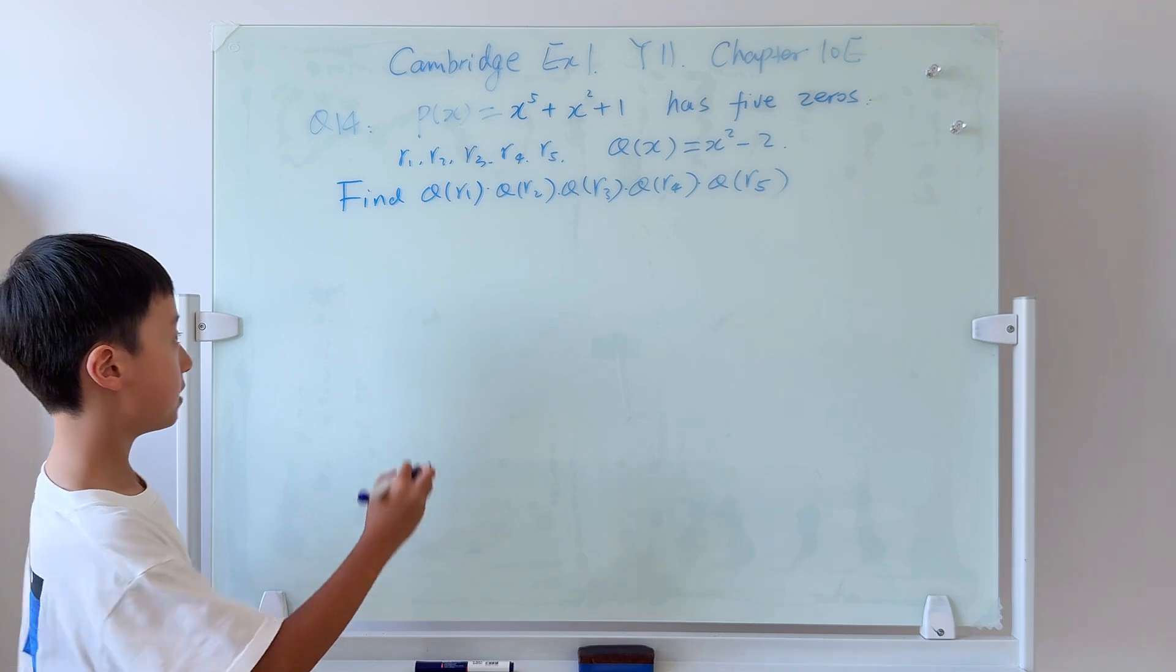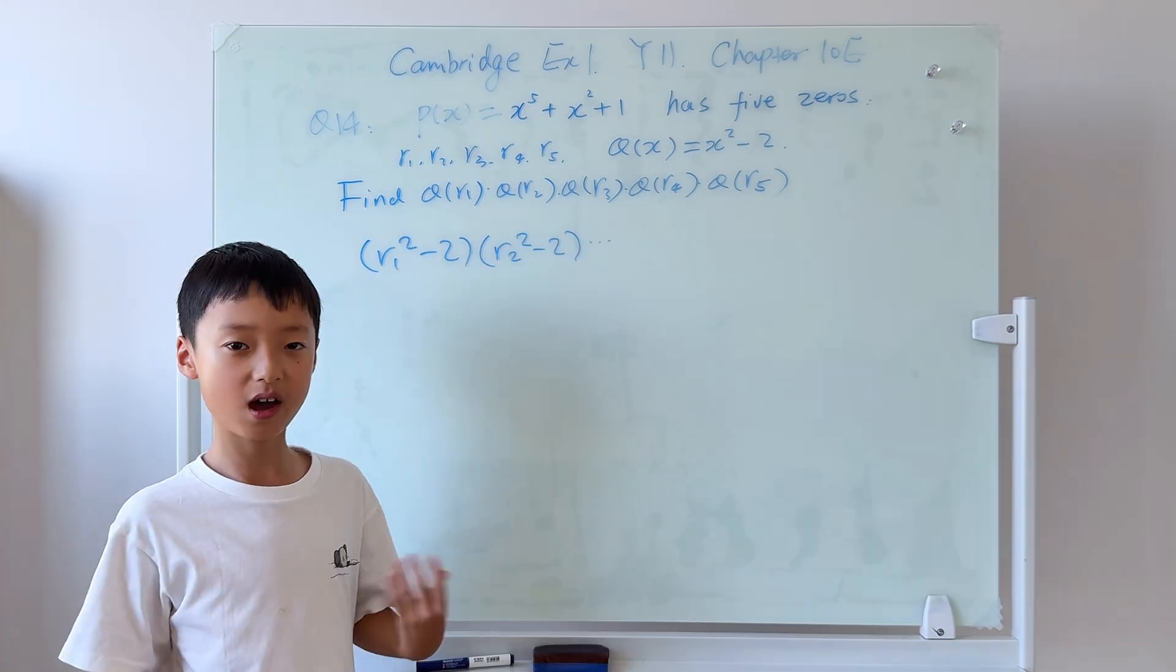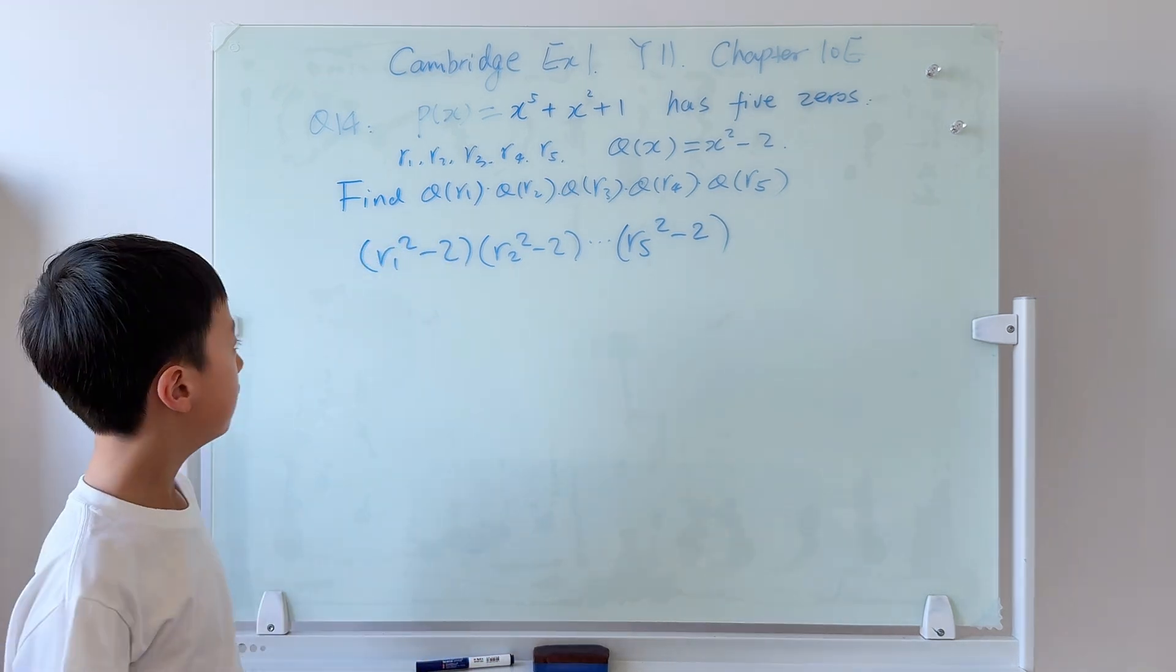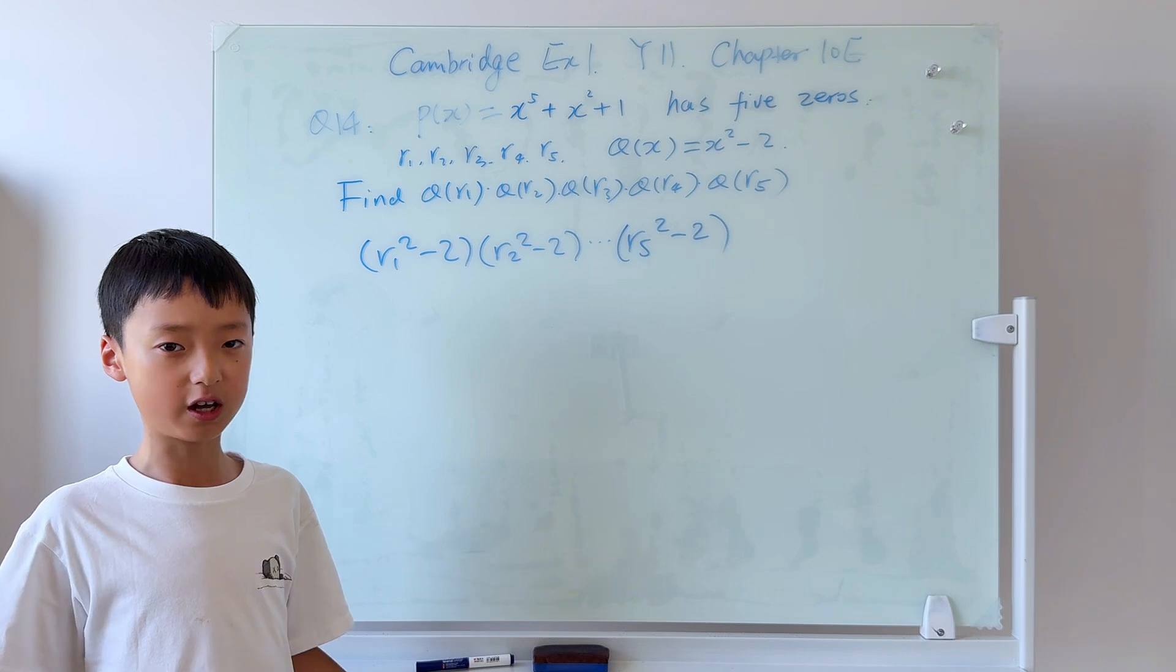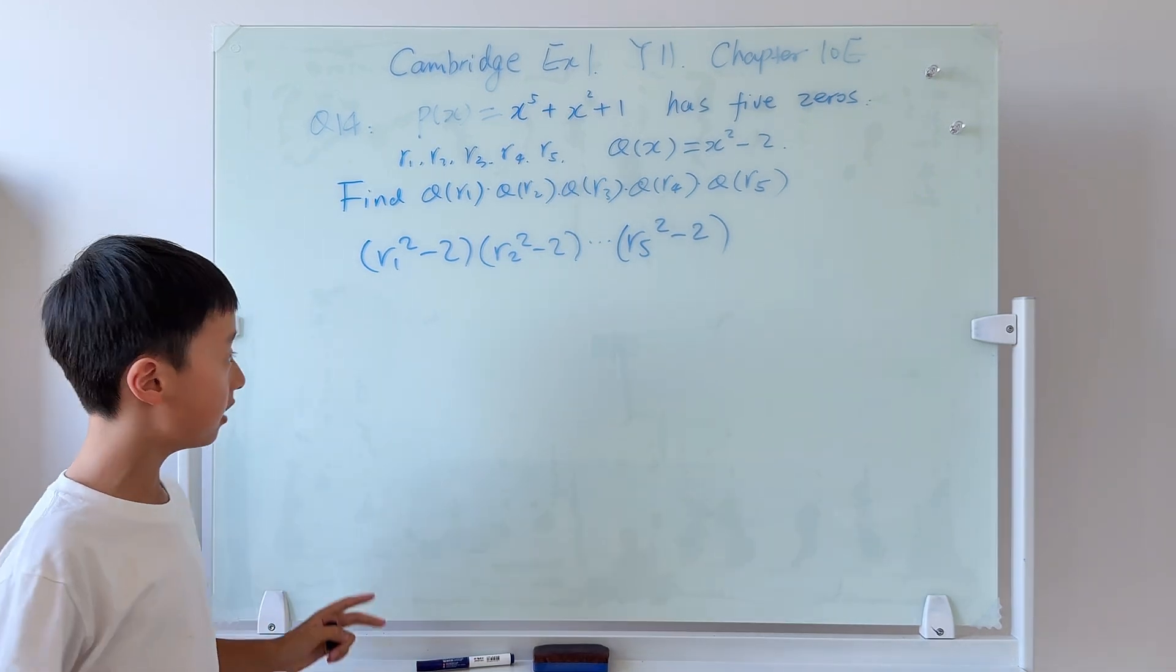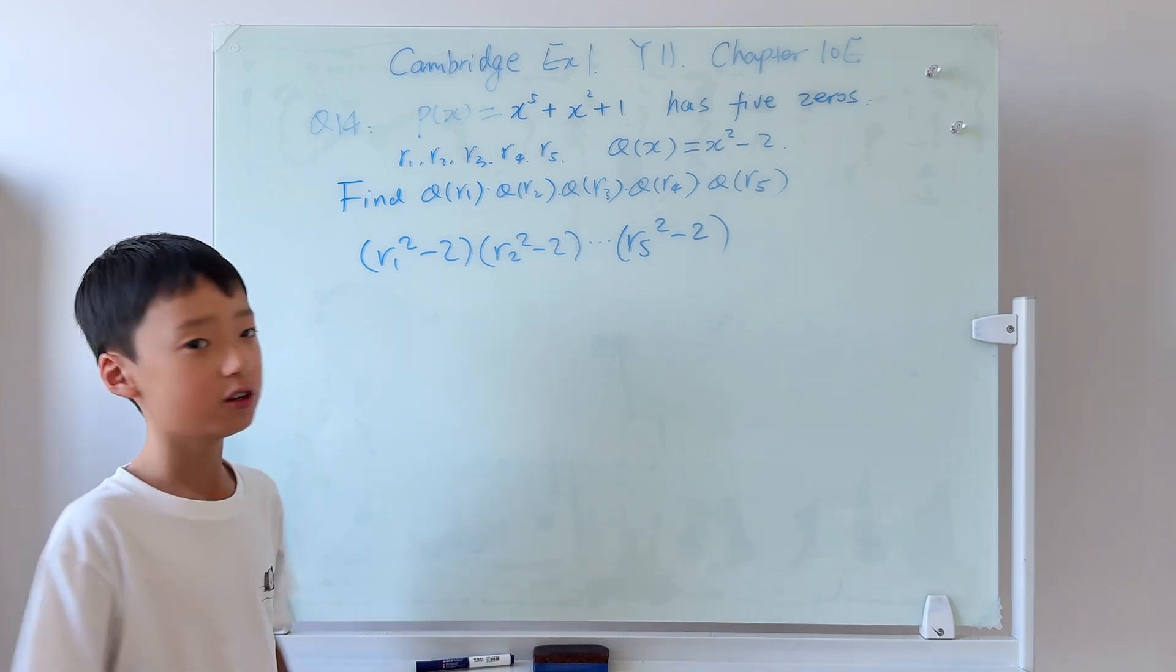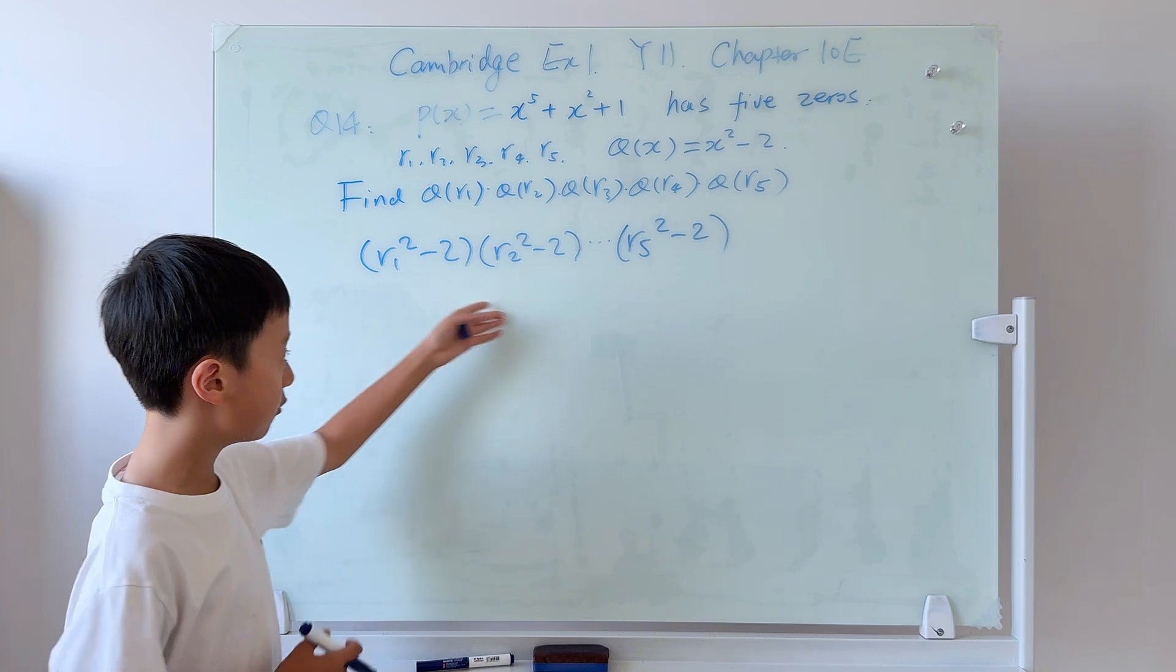It will become r1 squared minus 2, times all the way to r5 squared minus 2. Now, if you unpack this, it would be really hard because first of all, there would be way too many terms, and second of all, there will always be terms like r1 squared, r2 squared, all the way to r5 squared. So it's almost impossible to use the root formula. That's why we should not unpack this.